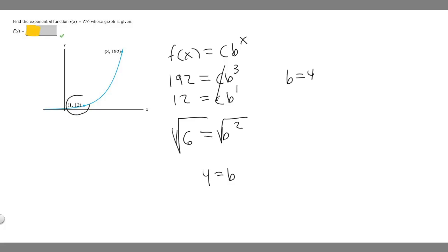I'm going to pick a point and plug in b. I'll use this one because it's easier. We know that 12 = c*b, and we know that b is 4 raised to the 1. So 12 = c*4. If we divide both sides by 4, we get 3 = c.